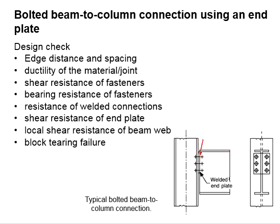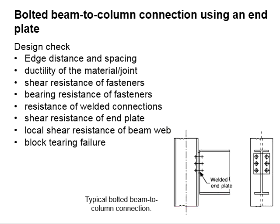The end plate is welded to the beam and bolted to the column. To ensure the stability of the connection, the joint between the plate and the beam as well as the joint between the plate and the column should not fail. Both need to be checked in terms of capacity, and the weaker resistance would govern the strength of the connection.